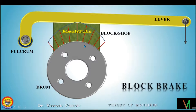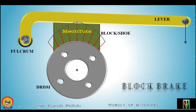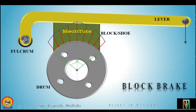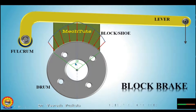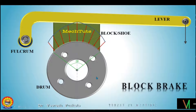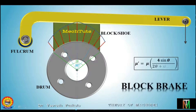This is based on the angle 2-theta. Suppose this block subtends an angle of 2-theta at the center of the drum, where theta is on each side, making 2-theta in total. This is known as the contact angle. If 2-theta is less than 60 degrees, the pressure is assumed to be uniform. But if it is greater than 60 degrees, the pressure will not be uniform.